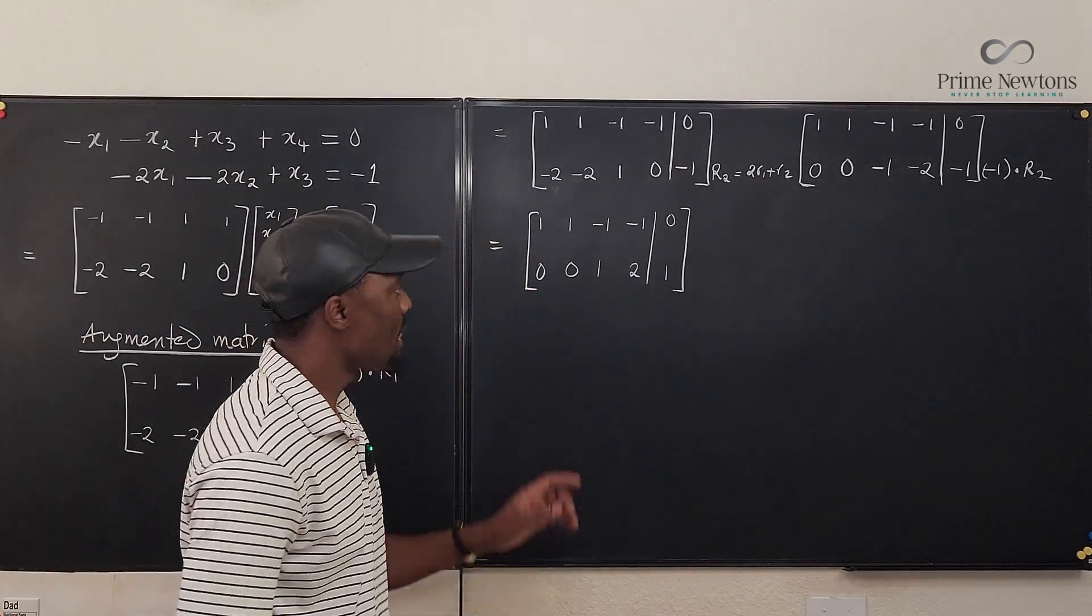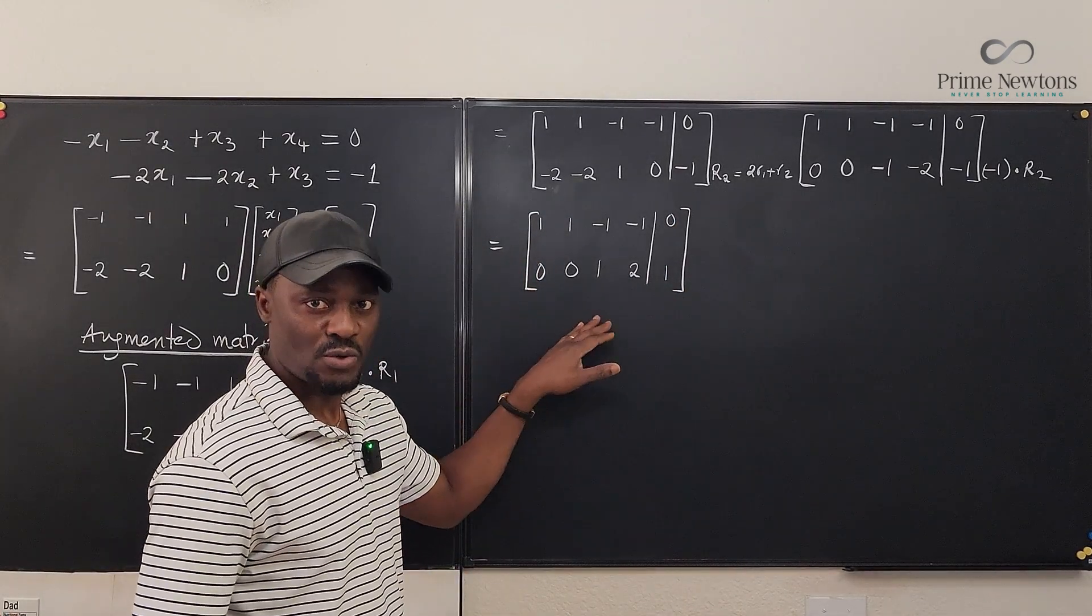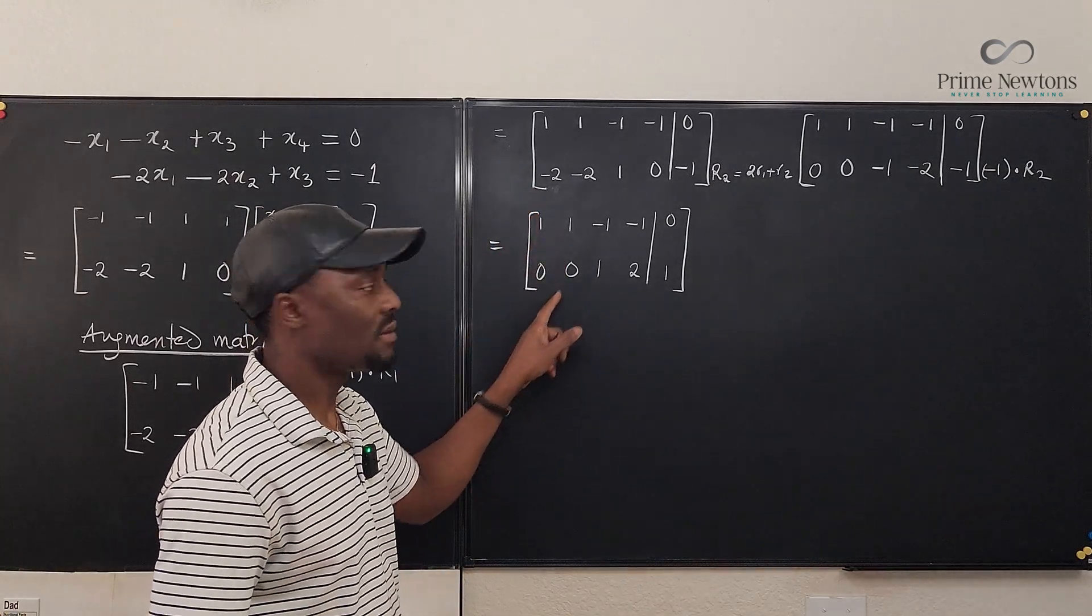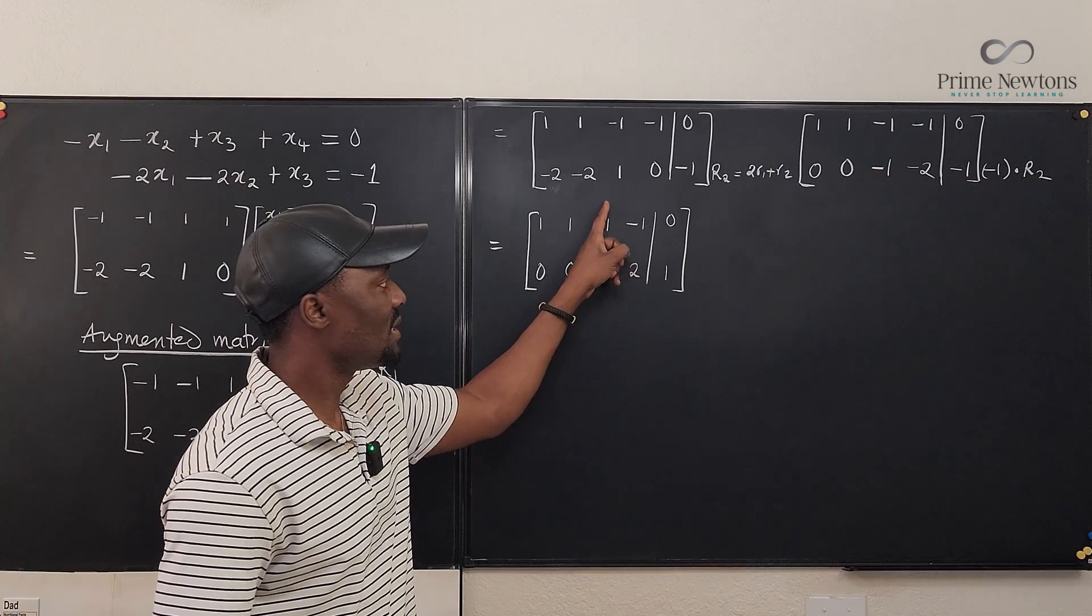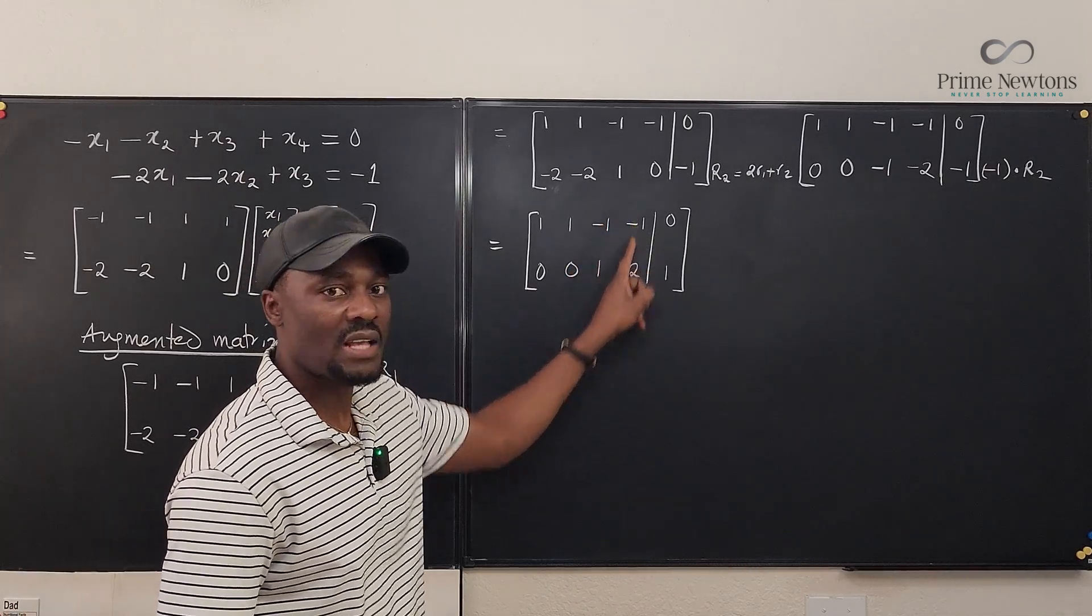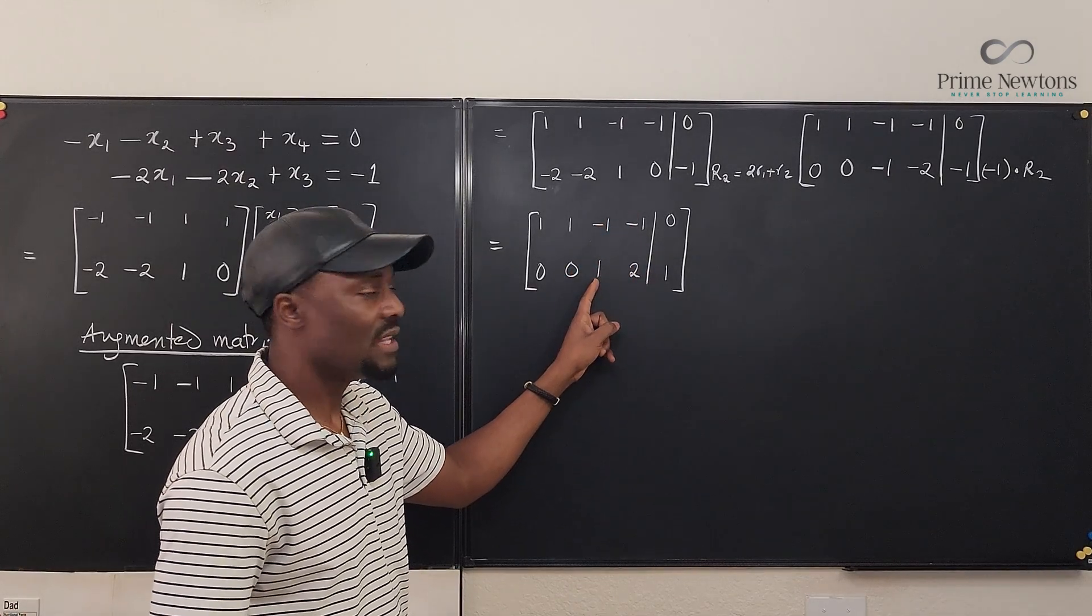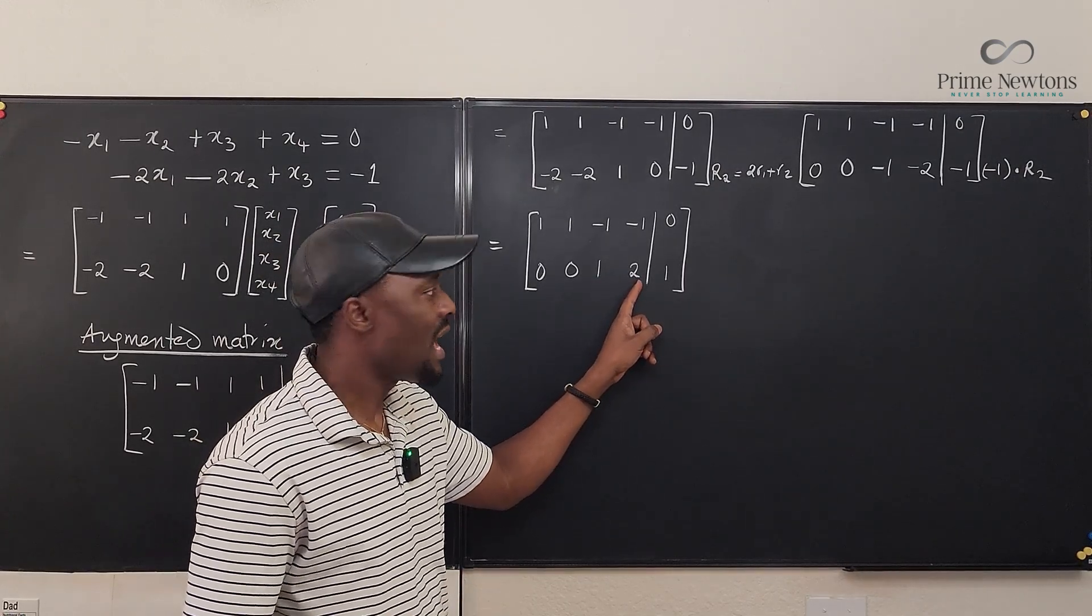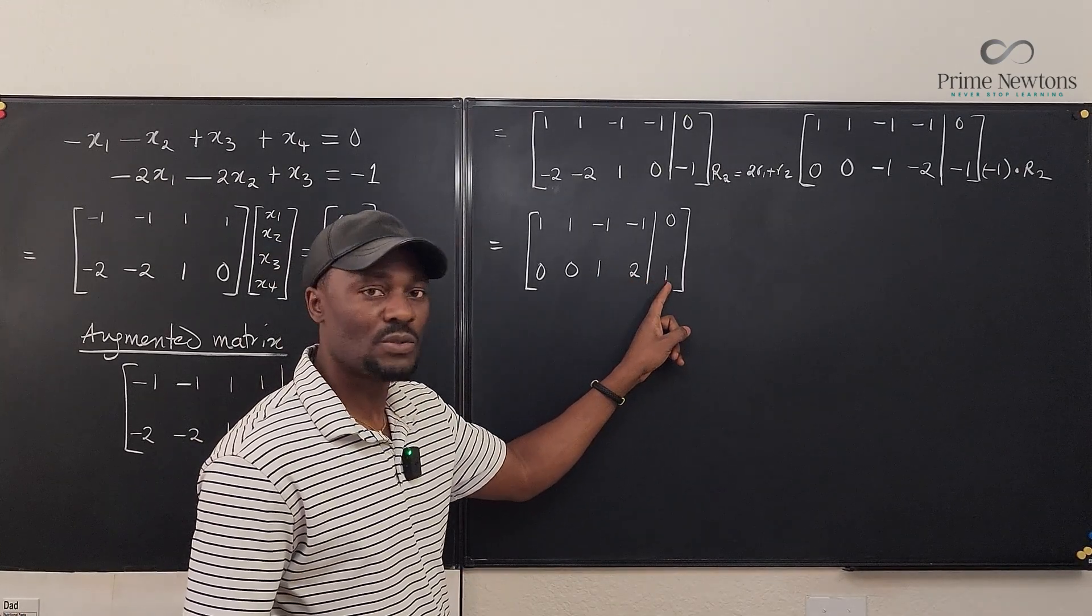Okay. What does this mean? So let's start from the bottom row because it has fewer variables remaining. This was the column for x1. This is x2. This is x3. This is x4. So it looks like the second row had x3 and x4 surviving and the sum of both of them was one.